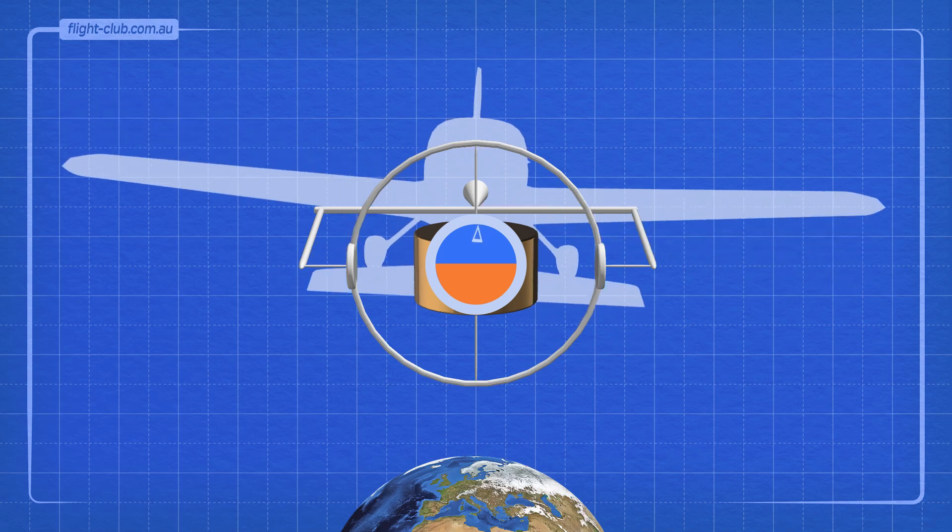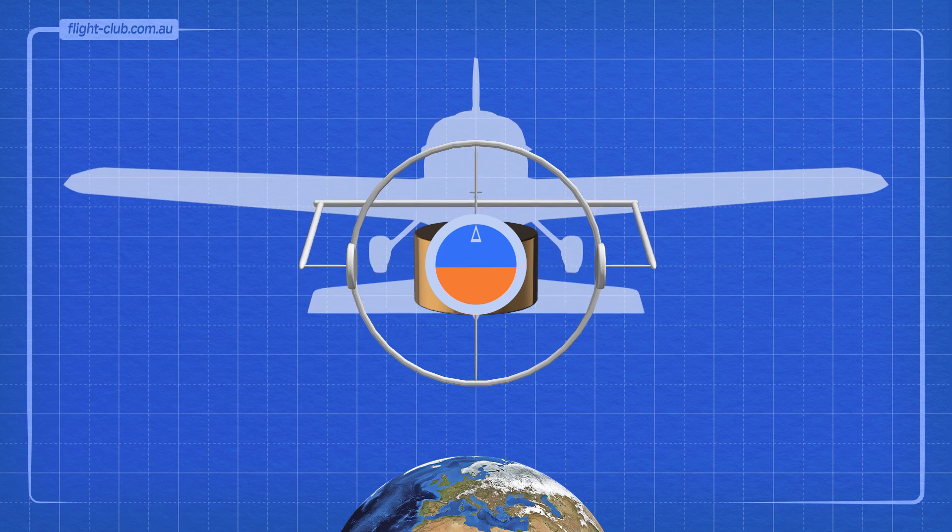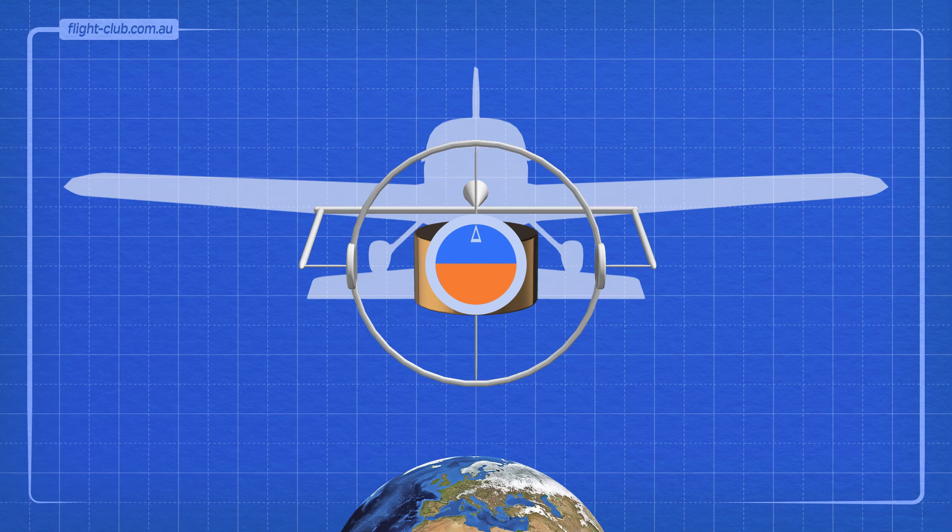More gimbals give the gyroscope more freedom of movement. This allows the attitude indicator to show pitch attitude as well as bank angle.